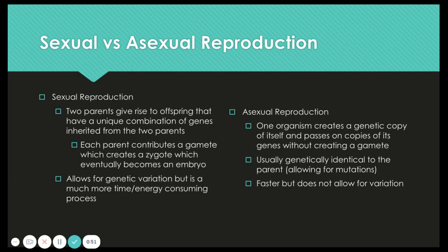Starting with sexual reproduction. Sexual reproduction is when two parents give rise to offspring that have a unique combination of genes inherited from the two parents. As we talked about in Unit 1, this is when two organisms come together and contribute to the genes of one new organism. It is not a copy of either of them — it is a mixture of the two.